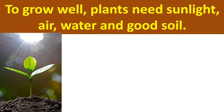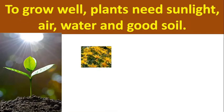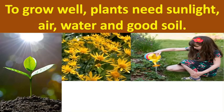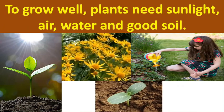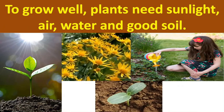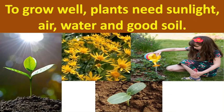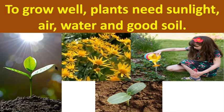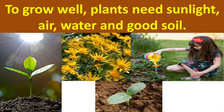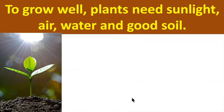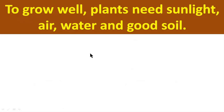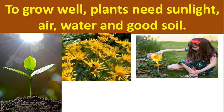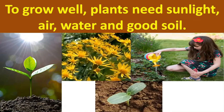To grow well, plants need sunlight, air, water, and good soil. How many things? Four things are needed: sunlight, air, water, and soil. Four things are essential and important for plants.